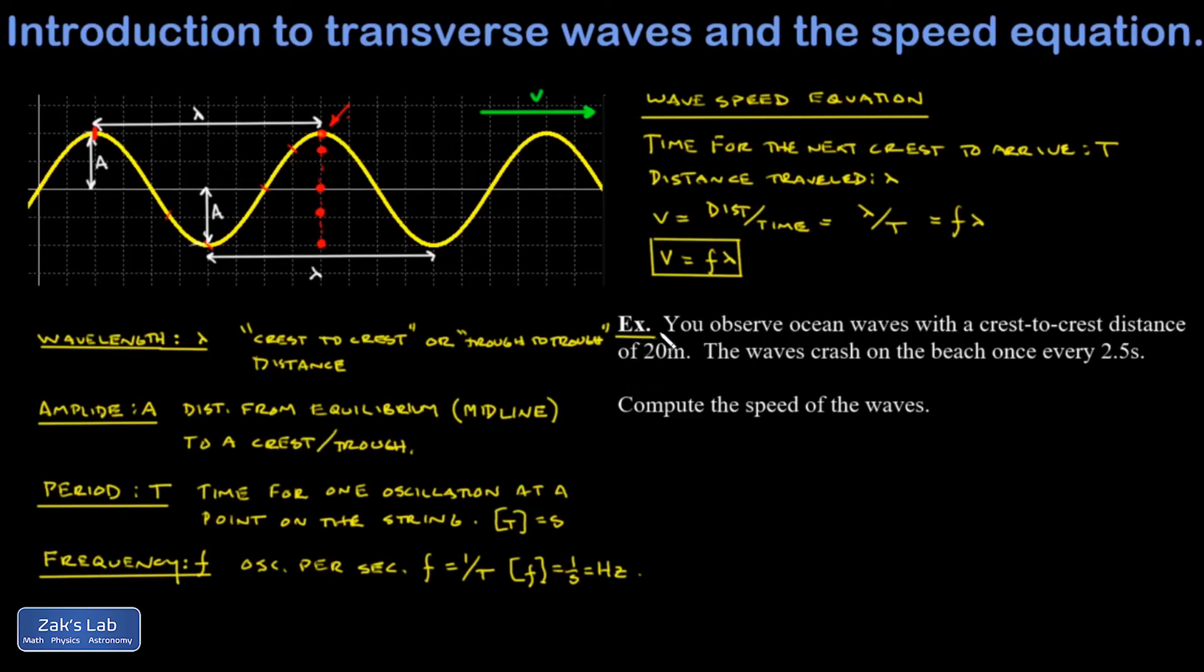We end with a short example. In this example, we're told that we're watching some ocean waves that have a crest to crest distance of 20 meters. In other words, lambda equals 20. We also know that they're hitting the beach once every 2.5 seconds. So that means the period of oscillation, the time it takes for this wave behavior to repeat, is 2.5 seconds.